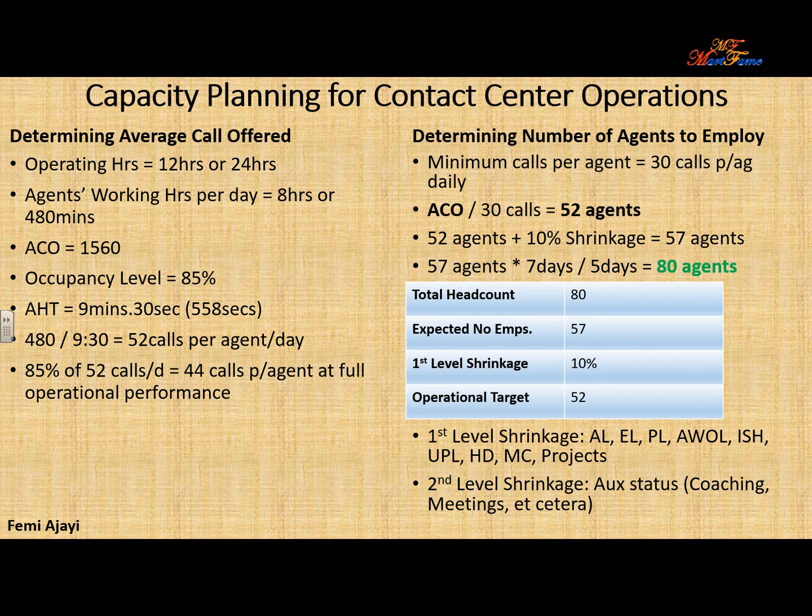The next thing you want to set is your occupancy level. Occupancy is how busy you want your agent to be within a given period — for example, one hour or in a day. The industry standard is often between 80 to 90, but in this case let's put it at 85.